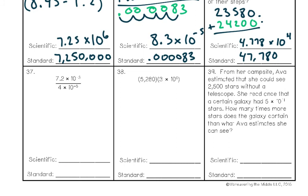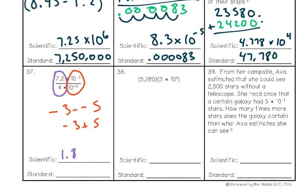Number thirty-seven is a division problem — there's a fraction bar. Break it into two separate problems: divide the numbers and divide the powers of ten separately. The numbers: get 1.8 as the result. For the powers, use the quotient rule — same base divided, subtract the exponents: negative 3 minus negative 5 equals negative 3 plus 5, which is 2. Final answer: 1.8 times 10 to the second, or 180 in standard notation.